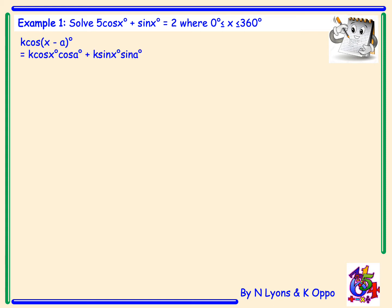So starting with our expansion k cos x cos a plus k sin x sin a, again rearrange this before making sure we equate our coefficients. So k cos a lies in front of cos x which will be 5, and k sin a lies in front of sin x which will be 1.